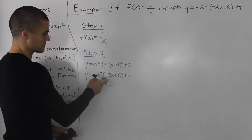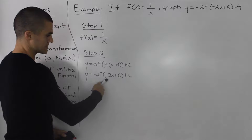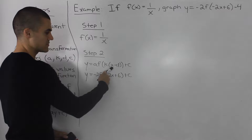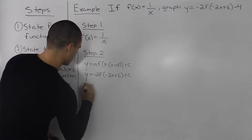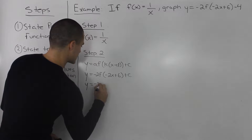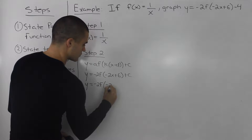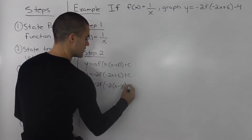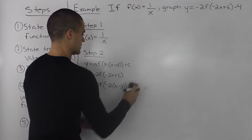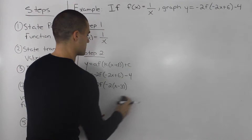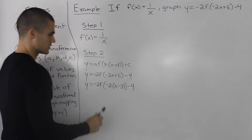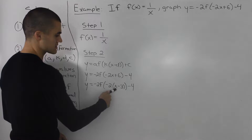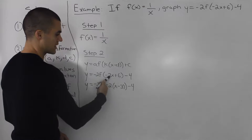We have to make sure that both formats are the same so we can easily see what each letter is. Notice how inside the bracket there's a negative 2 attached to the x, but in the general format the x has to be by itself — the k has to be factored out. So we have to rewrite what's inside the bracket: factor out the negative 2, leaving x, and then positive 6 divided by negative 2 is negative 3. So we're left with x minus 3. The minus 3 comes from 6 divided by negative 2.